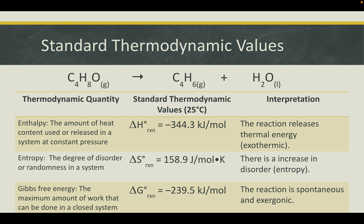If we take a look at our enthalpy, or our delta H value — which is the amount of heat content released or used in a system at constant pressure — we can see that the value is negative. From this, we can infer that the reaction releases thermal energy into its surroundings, making our reaction exothermic. The entropy, delta S, or the degree of disorder and randomness in a system, is a positive value of 158.9, meaning there is an increase in disorder, or an increase in entropy.